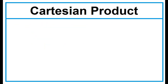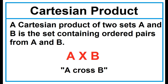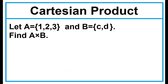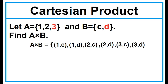Cartesian Product. A Cartesian product of two sets A and B is the set containing ordered pairs from A and B. The symbol is read A cross B. To find the elements of A cross B, pair each element in Set A to each element in Set B, separated by a comma and enclosed in parentheses. The ordered pairs are (1,C), (1,D), (2,C), (2,D), (3,C), (3,D).